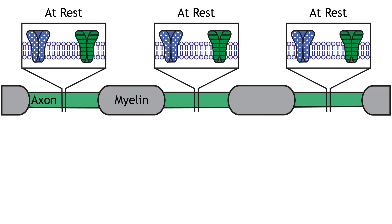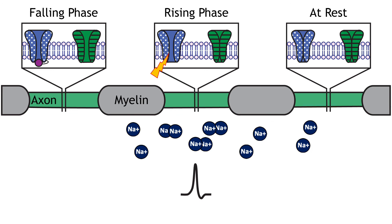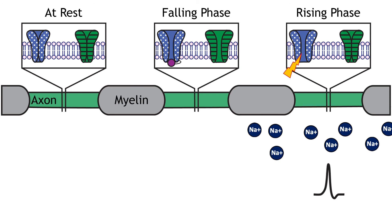The action potential moves down the axon due to the influx of sodium depolarizing nearby segments of the axon to threshold. A voltage change that reaches threshold will cause voltage-gated sodium channels to open in the axonal membrane. The influx of sodium causes the rising phase of the action potential, but the ion flow also depolarizes nearby axon regions. As the depolarization reaches threshold, the action potential moves down the axon.